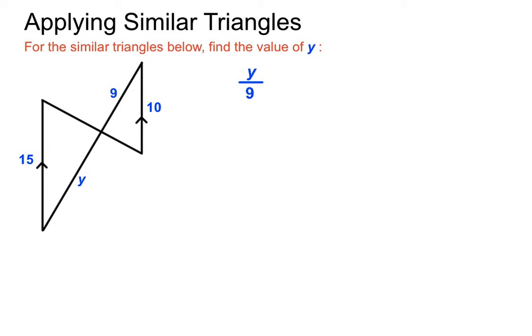should equal something else from the y triangle over his matching. So you can see that 15 is from the y triangle. He should go on the top. And the 10 from the other triangle should go on the bottom because they're both the longest side of their respective triangles there. They should match up. So we have 15 over 10.